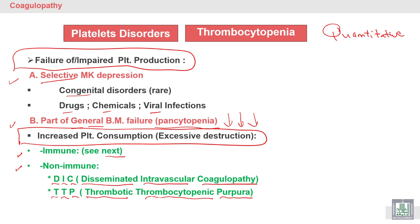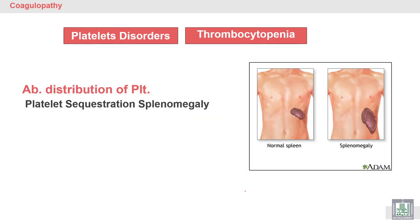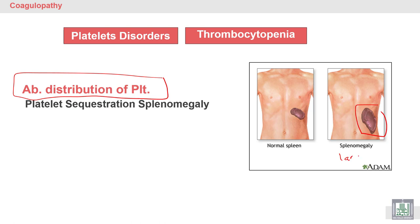Thrombocytopenia may also be due to abnormal distribution of platelets. Most platelets are retained in a large spleen — when there is splenomegaly, as you can see, there are many platelets inside the spleen. This is called platelet sequestration — collection of platelets inside the enlarged spleen.